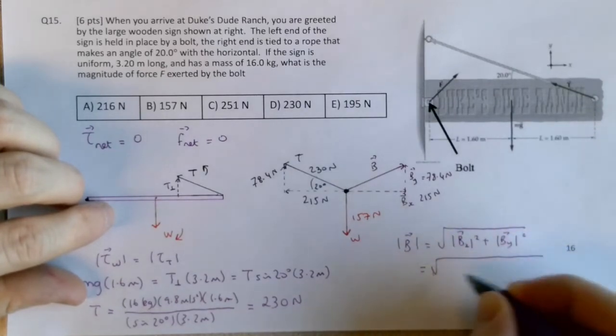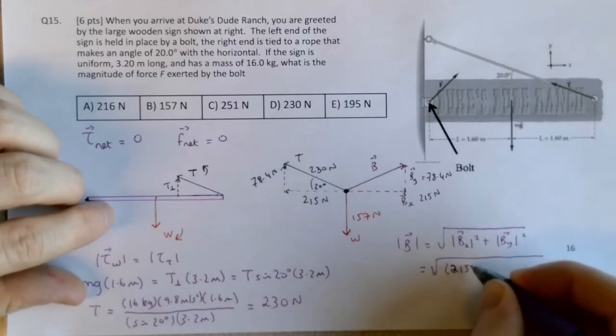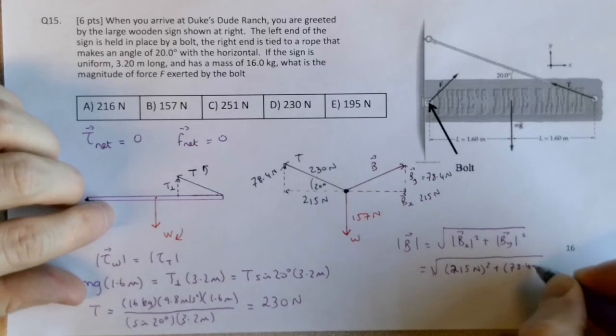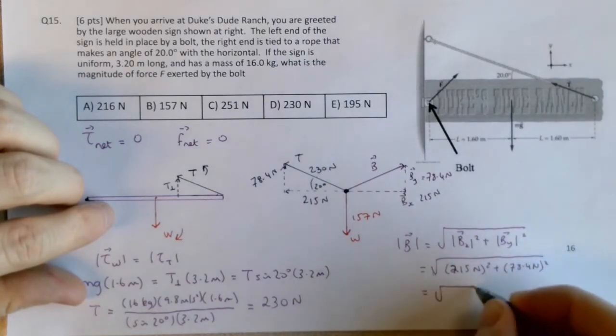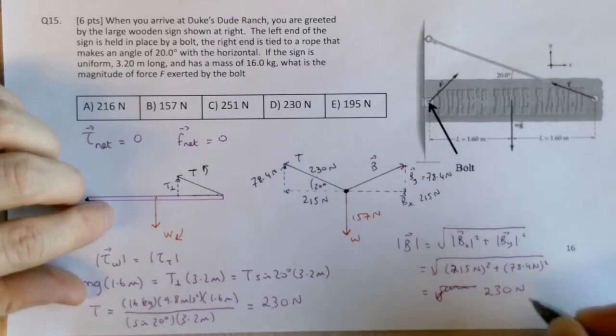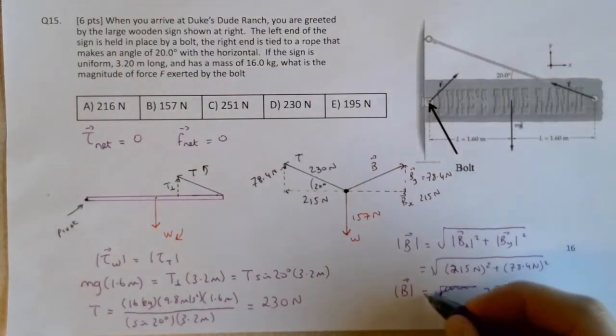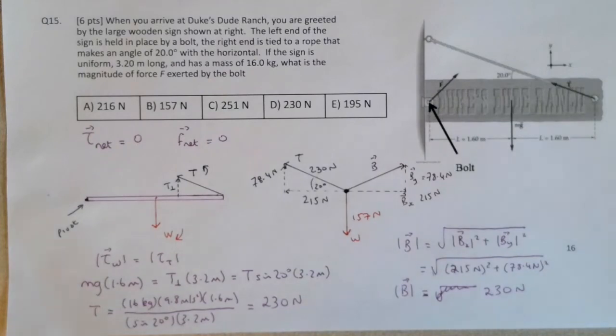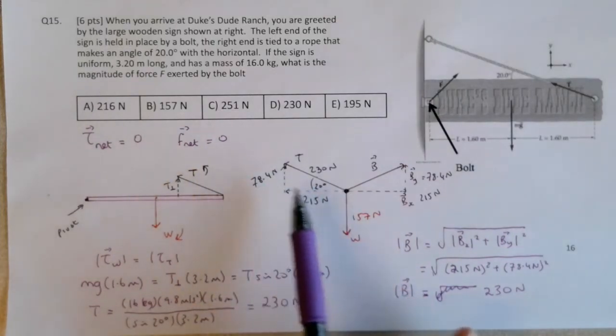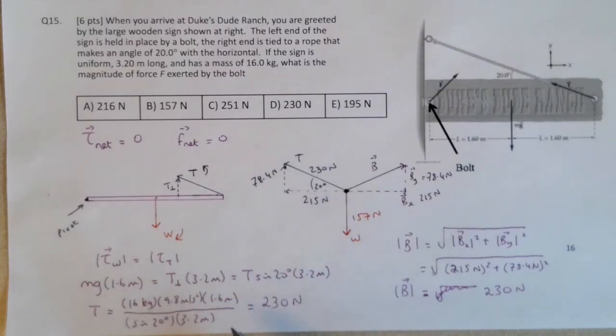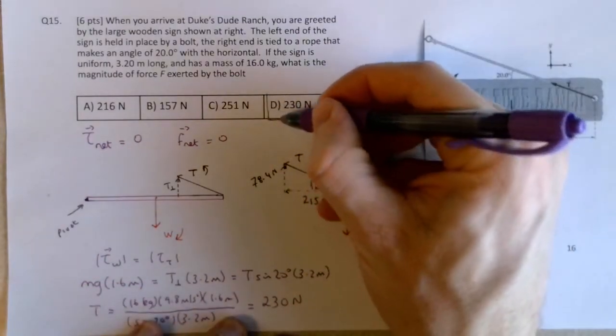So I'm writing this as the square root of 215 newtons squared plus 78.4 newtons squared. And this does work out to be 230 newtons. And again, this is down to the symmetry in the problem. This is not always the case. But this is the strategy for a general torque problem. You're combining some torque analysis to figure out the size of the forces, you're using Newton's second law and that net force is zero, and looking at the balancing of components to lead you to what is happening at the bolt in this case, so choice D is correct.